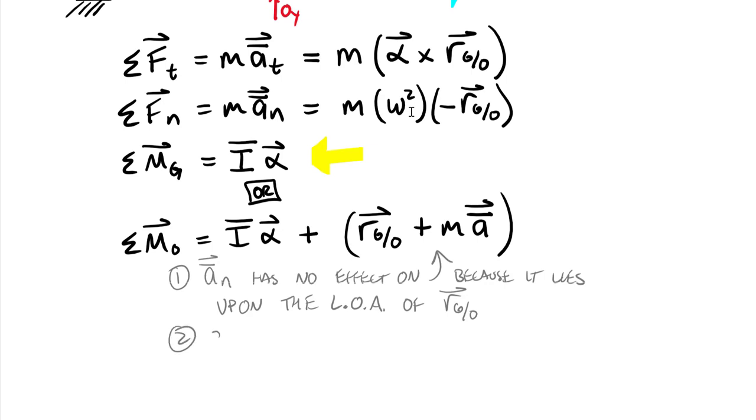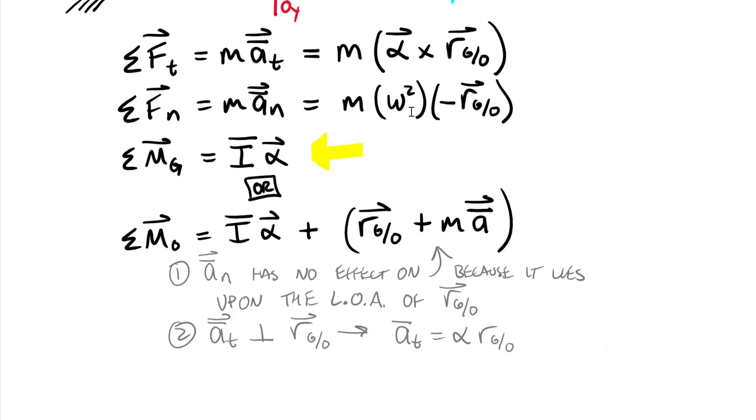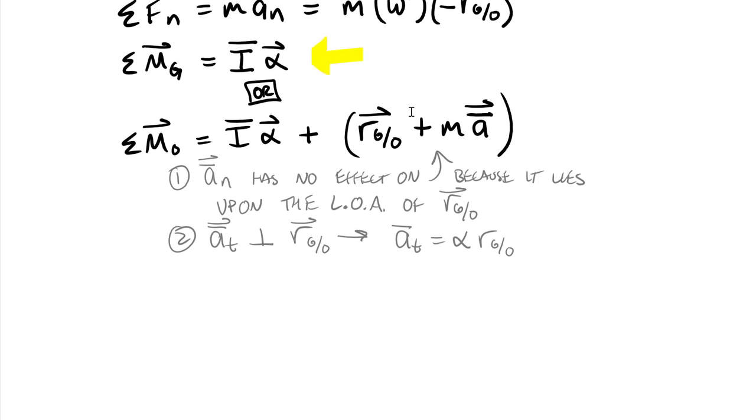And two, we can say that our acceleration of the centroid as a vector tangential is perpendicular to this position vector R of G relative to O. Therefore, we can write the value of A bar sub T equal to alpha times the position vector R of G relative to O, which is just that distance between the fixed axis pin and the center. We would need to pick up the sign of this from the right-hand rule if we continue forward in vector terms, but I'll show you we don't even need to worry about that.